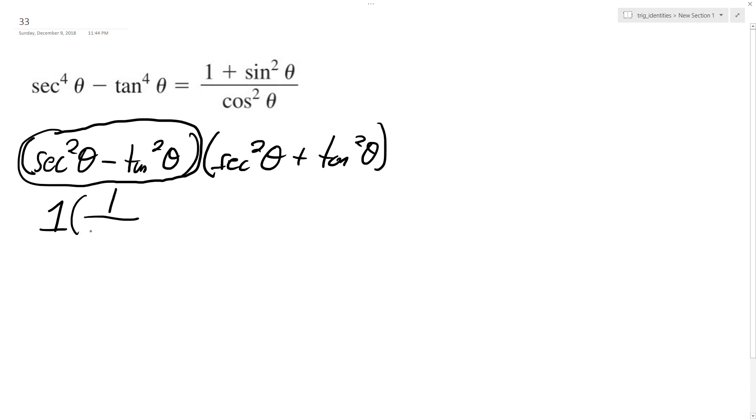Now I'm going to convert this into 1 over cosine squared theta plus sine squared theta over cosine squared theta. And I can combine 1 and sine theta because these have the same common denominator. So we have 1 plus sine squared theta over cosine squared theta.